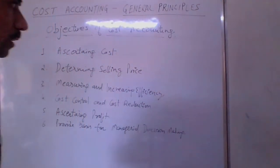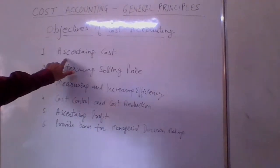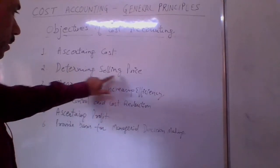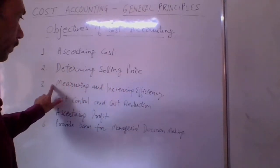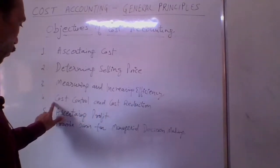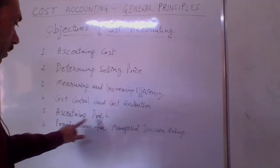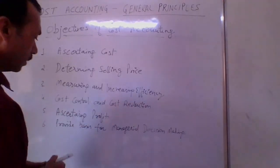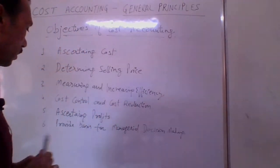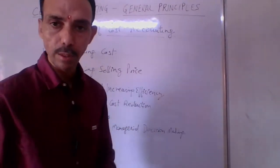The sixth and last objective is to provide a basis for managerial decision making. So these are the six objectives of cost accounting: ascertaining cost, determining the selling price, measuring and increasing efficiency, cost control and cost reduction, ascertaining profit, and providing a basis for managerial decision making.